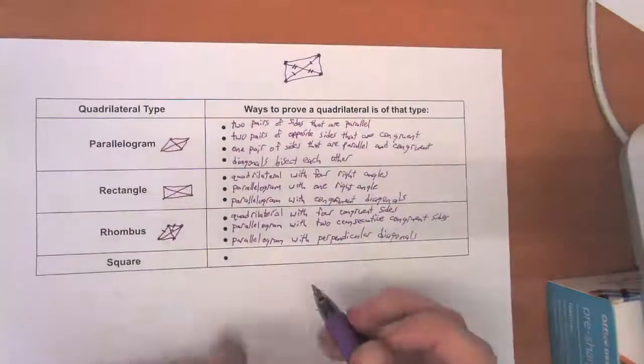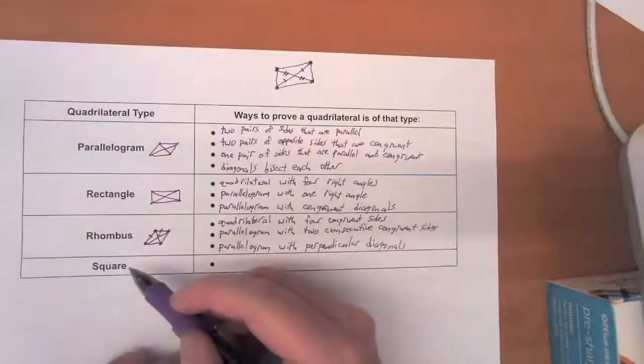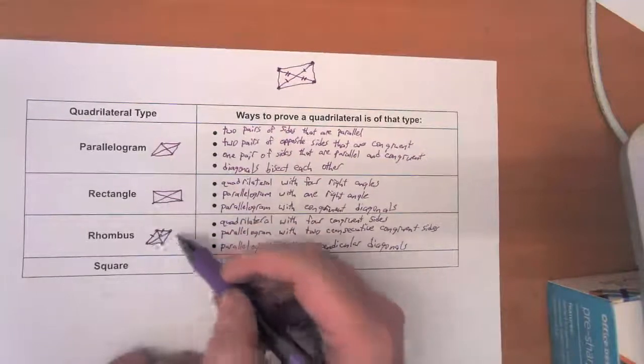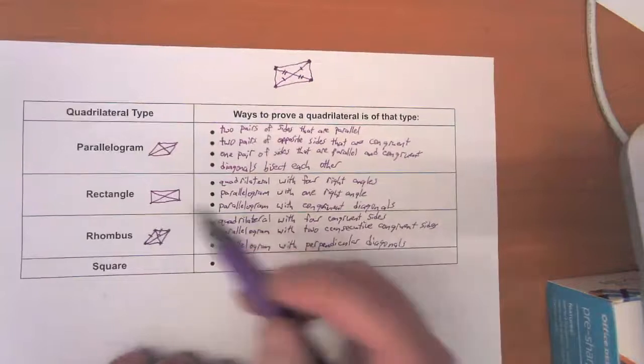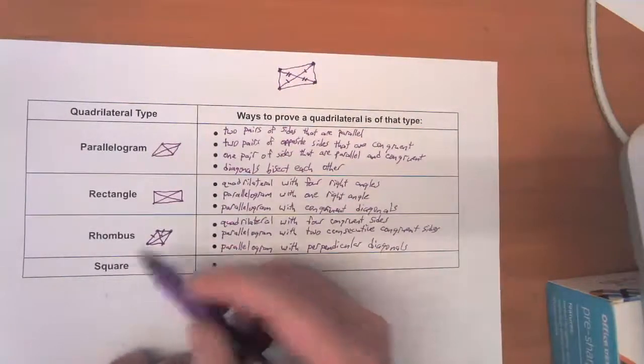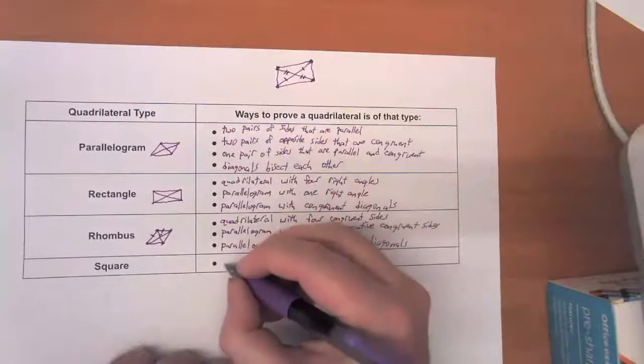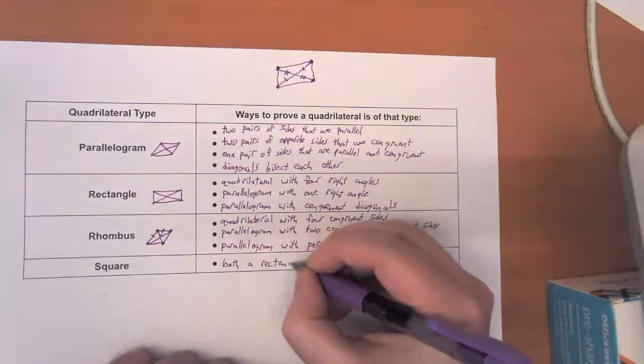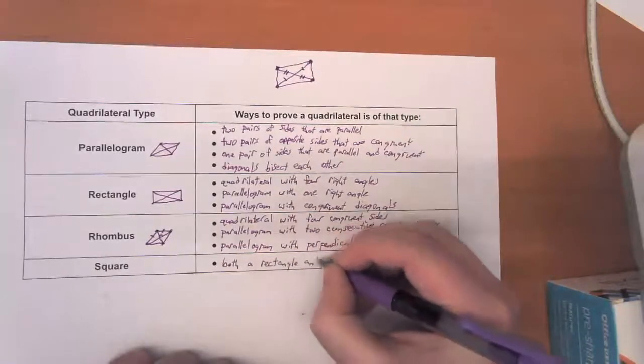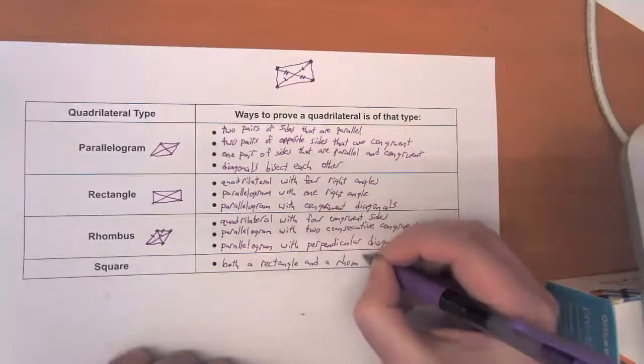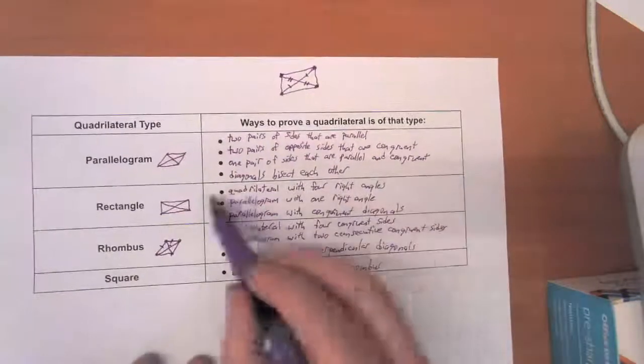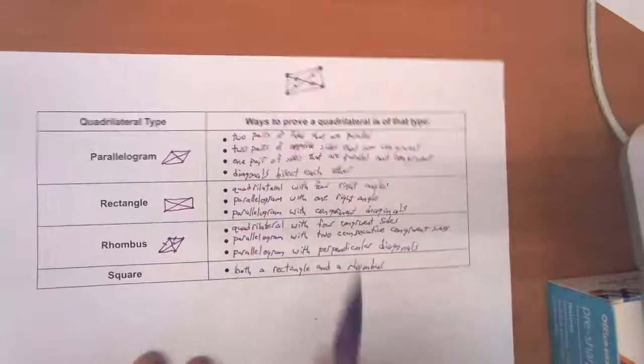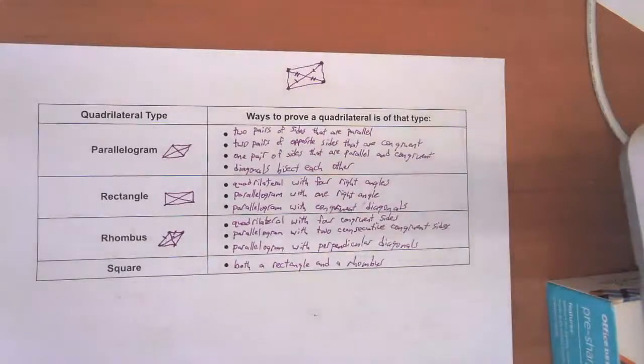And the last thing is a square. And so a square is a rectangle because it's got all right angles, and it's got all of the properties of a rhombus because all four sides are the same thing. So to prove that something is a square, you need to be, okay, so we could do anything from this column and anything from this column. As long as I got one of each, I've proven that that's a square.